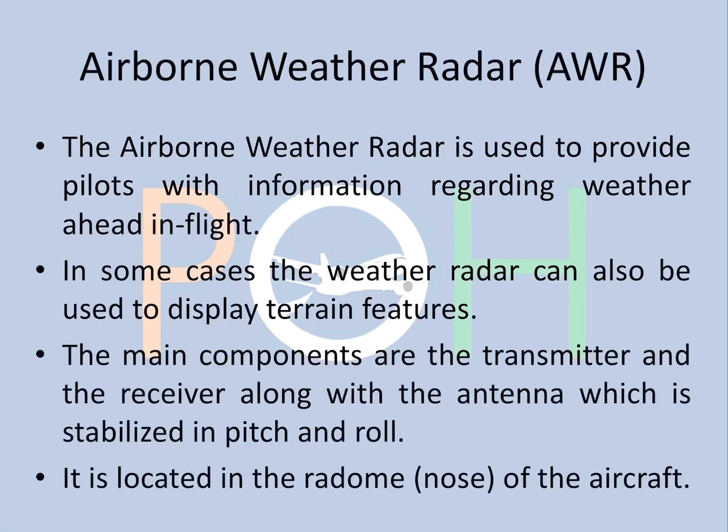The airborne weather radar is used to provide pilots primarily with information regarding weather ahead in flight, and you can also use the weather radar to display terrain features. The main components are the transmitter and the receiver along with the antenna, which is stabilized in pitch and roll. So even if the aircraft is pitching up and down or rolling left or right, the antenna is stabilized to give accurate information about weather. The airborne weather radar is located in the radome area of the aircraft, which is the nose of the aircraft.